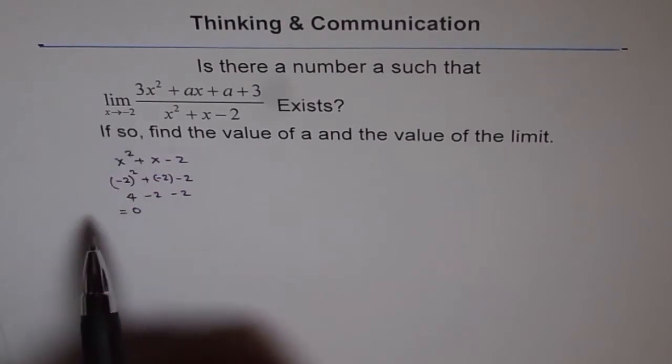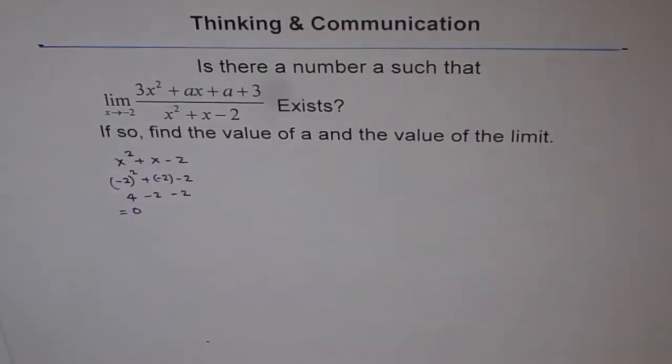So, at x equals to minus 2, denominator becomes 0. Now, for the limit to exist, numerator should also be 0 at x equals to minus 2. Otherwise, limit will not exist since you cannot divide anything by 0.